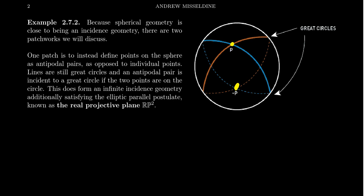Spherical geometry is sometimes called two-point elliptic geometry because two lines always intersect at a pair of antipodes. Because it's not an incidence geometry, if you want an incidence geometry that's infinite and satisfies the elliptic parallel postulate, it's tempting to instead use the so-called one-point elliptic geometry, as opposed to spherical geometry which is the two-point elliptic geometry.